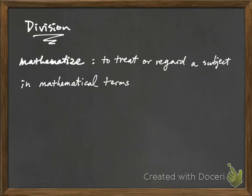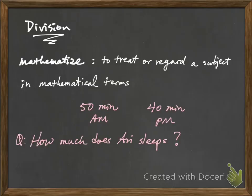For example, if Ari sleeps 50 minutes in the morning and 40 minutes in the afternoon, then the question to find out how much does Ari sleep can be mathematized by doing 50 plus 40, which gives us 90 minutes. The addition operation that's used here is the appropriate operation for this problem.